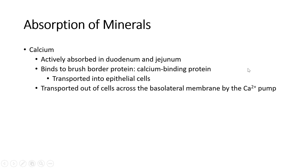Calcium is actively absorbed in the duodenum and jejunum. It binds to proteins in the brush border called calcium-binding proteins, which transport it inside the epithelial cell. It then crosses the basolateral surface of these cells by the calcium pump, which actively pumps it from the cell into the underlying capillary. Most of that absorption happens in the duodenum and the jejunum.